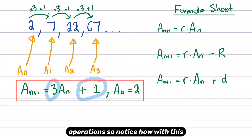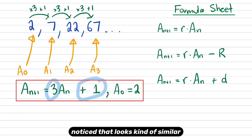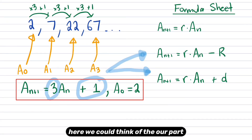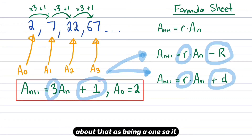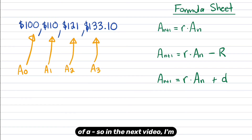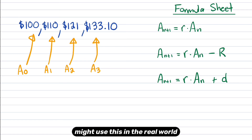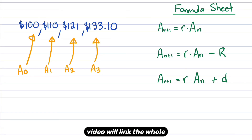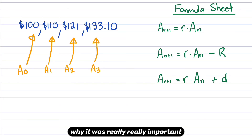Notice how with this recurrence relation there's a three in front of a(n) and a one at the end. That looks similar to these two formulas on the sheet — we could think of the r part as being three, and the last constant on the end as being one. It more closely resembles the third formula because there's a plus sign instead of a minus sign. In the next video, I'm going to start getting into some financial applications and how we use this in general maths, linking recurrence relations to real-world financial scenarios. It was really important to do this first video because it leads on to everything.